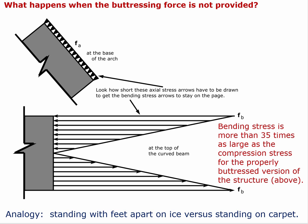For an analogy you can understand very acutely: imagine standing on a carpet with your legs spread wide apart. The friction of that carpet is what allows you to be comfortable in that position — your legs are basically in compression because there's a buttressing force at the bottom of your feet. Now imagine how it would feel if that carpet suddenly turned to an ice sheet giving you no such horizontal component — then you would suddenly experience what this curved beam is going through.